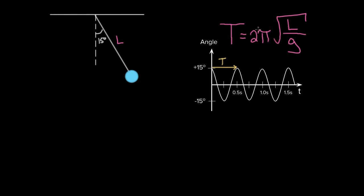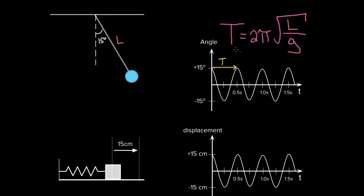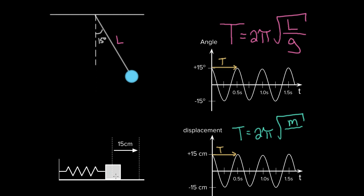If you've been paying attention in physics, you might notice that looks really similar to the formula for the period of a mass on a spring. If you were to take a mass on a spring and displace it 15 centimeters, you'd get a similar graph with a characteristic period of motion. The period for a mass on a spring is also two pi times the square root of a ratio — but instead of L over G, it's M, the mass of the block, divided by K, the spring constant.